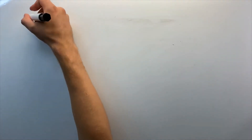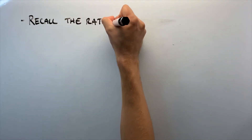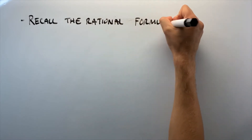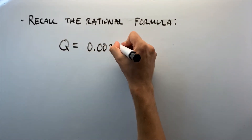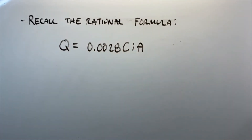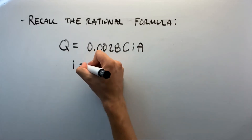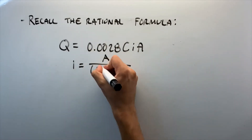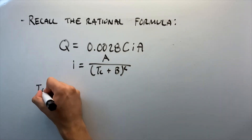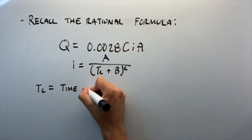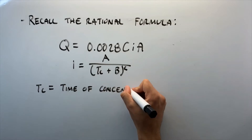Recall that the rational formula is Q = 0.0028 × C × I × A, and that I is equal to A divided by (Tc + B) to the power of C.